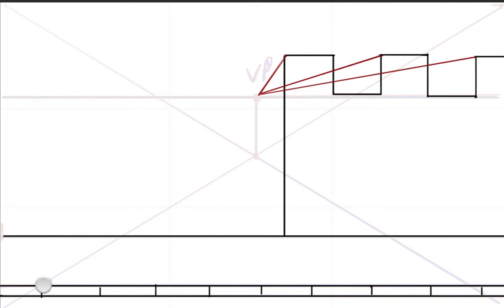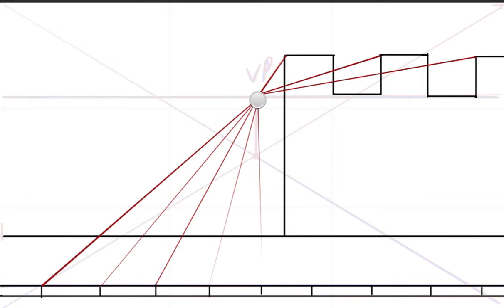Similarly, with the verticals of our curb stones, if we join each one to the vanishing point, we'll get that sense of where the curb stones lines must fall across the path. So I'm joining the top of each curb stone vertical to the vanishing point.